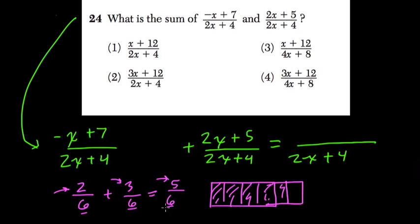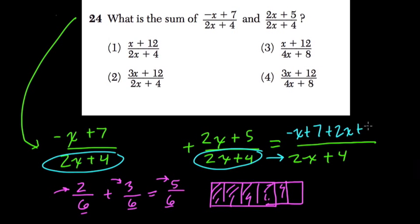It wouldn't make sense to add these two and get 12. Same thing here. We leave 2x plus 4 and 2x plus 4. That remains the same. All we need to do now is add the numerators, so it's negative x plus 7, right, plus 2x plus 5.